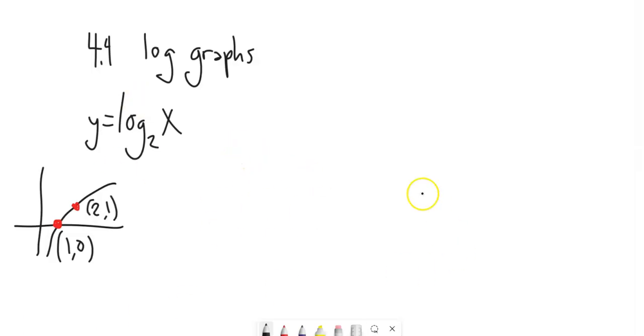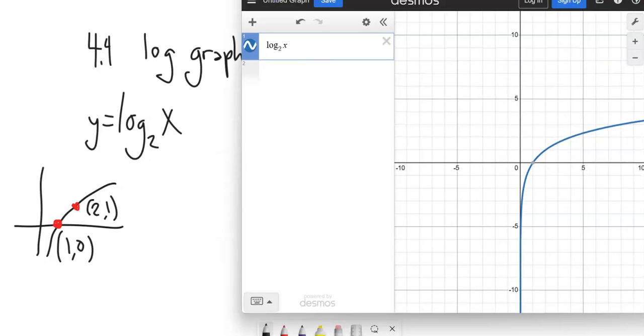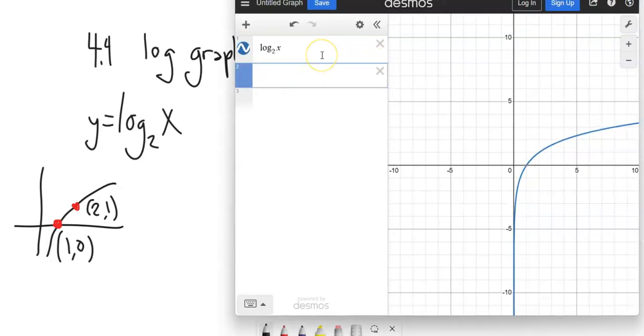So let's mess with some bases a little bit and see what we can discover. I've got this log base 2 of x. I'm going to get a log base 3 of x up here. Notice it still goes through the point (1,0), but now it goes through this point (3,1).